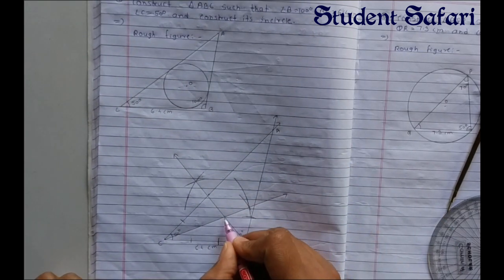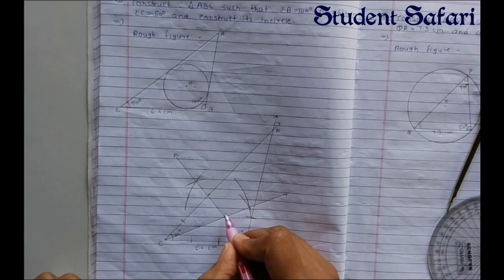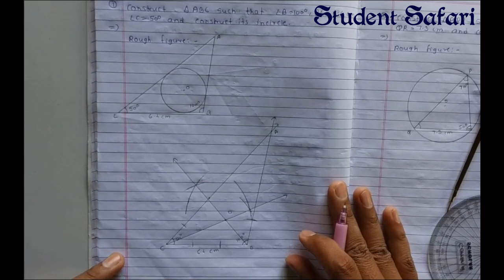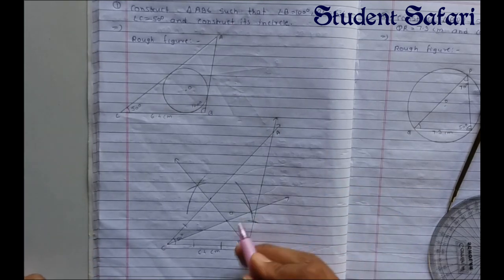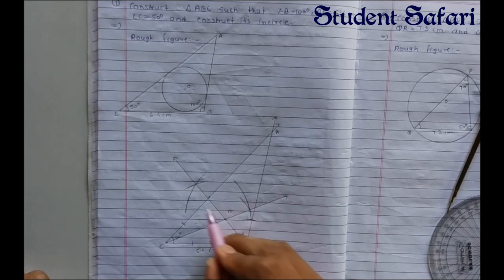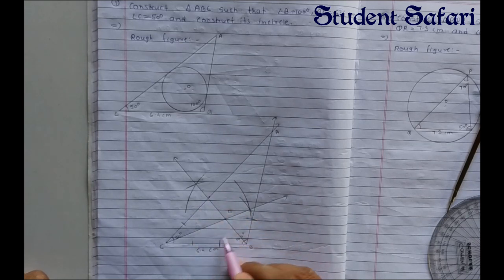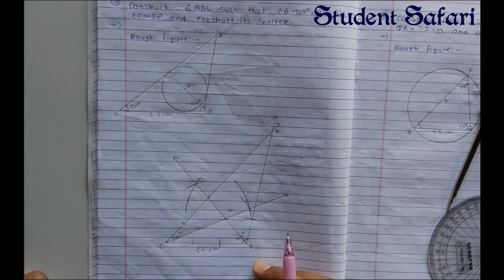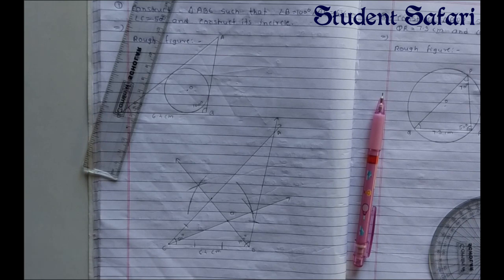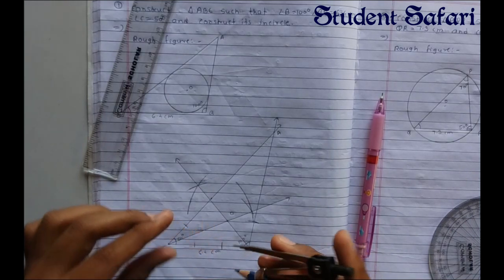After intersecting these two bisector lines, we get one point — this is our center O of the circle. Now we have to draw the incircle. To draw the incircle we draw a perpendicular from point O to any one of the three sides. Using that perpendicular distance we draw the incircle. We can draw the perpendicular directly using a scale or by the compass method.